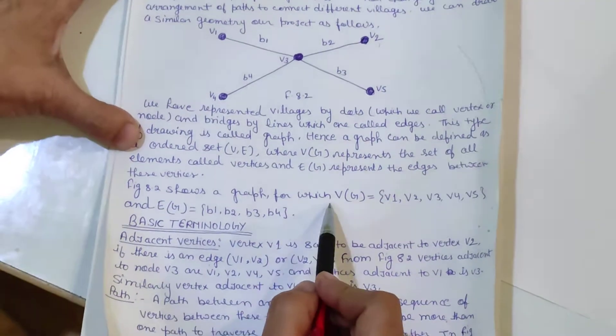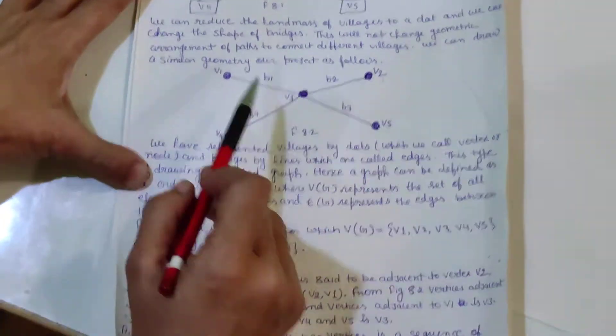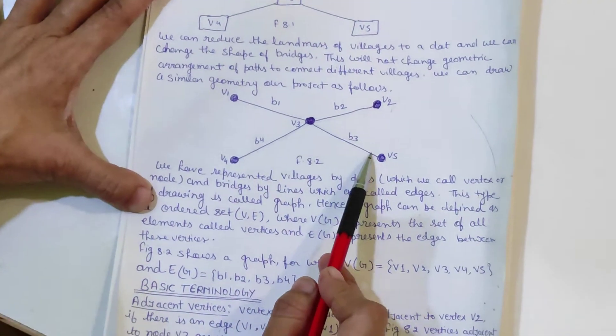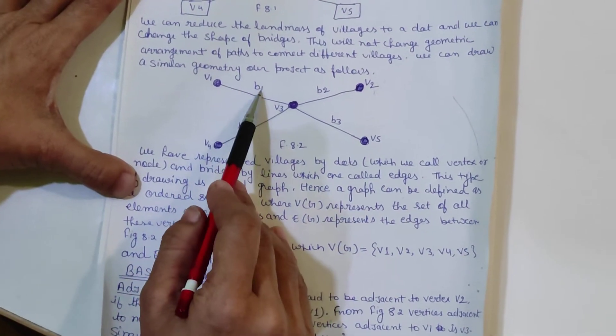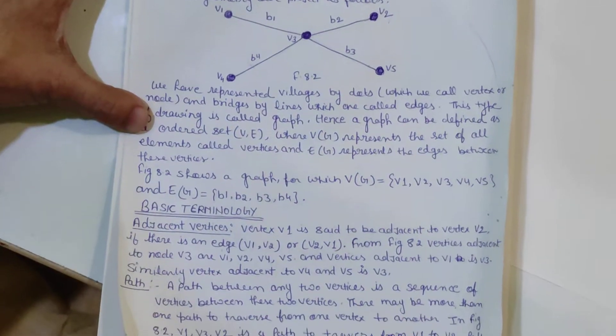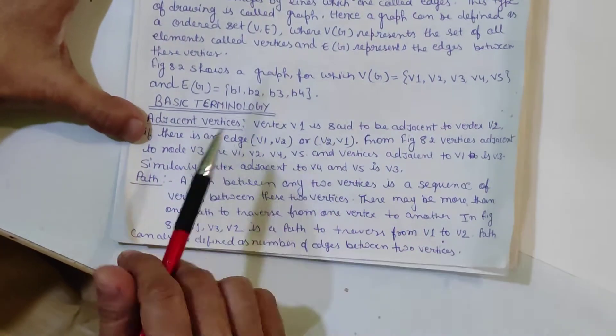This graph shows V(G) = {V1, V2, V3, V4, V5} and E(G) = {V1, V2, V3, V4}. Basic terminology: Adjacent vertices.